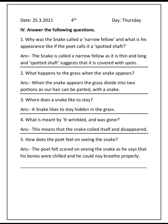4th question: What is meant by 'it wrinkled and was gone'? Answer: This means that the snake coiled itself and disappeared.